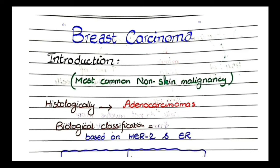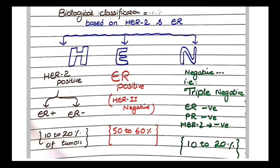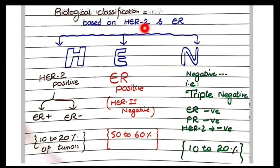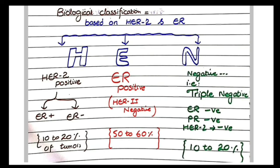The biological classification of breast cancers is based on HER2 and ER. HER2 is a gene, and if there is over-amplification of HER2 in breast cancer cells, we call it HER2 positive. ER means estrogen receptor — if there are estrogen receptors on the mutated breast cancer cells, we call it ER positive. This classification uses three categories, which can be remembered using the mnemonic HEN.